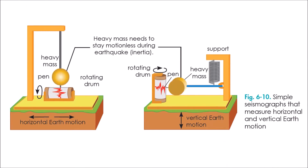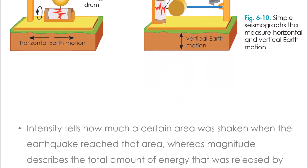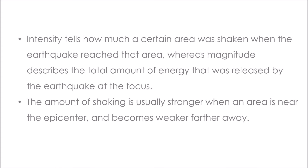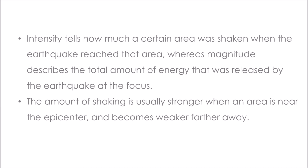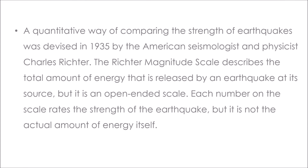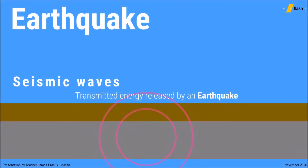Seismograph is one of the equipment used by seismologists to measure and record movement on the Earth. Seismologists measure in terms of intensity and magnitude, wherein intensity tells how much an area was shaken, while magnitude describes the total energy released by an earthquake at the focus. The intensity is stronger near the epicenter but becomes weaker farther away from it.